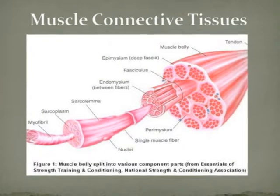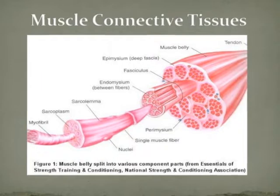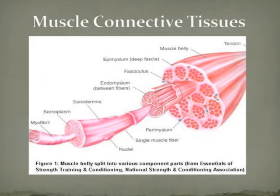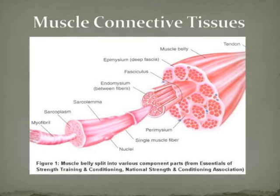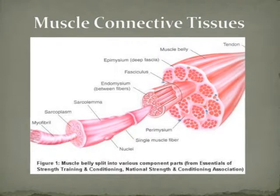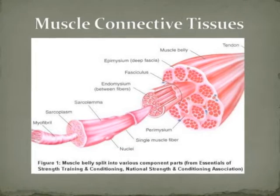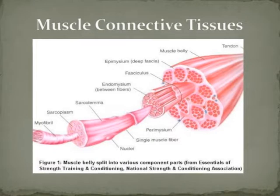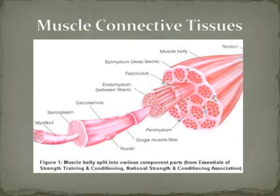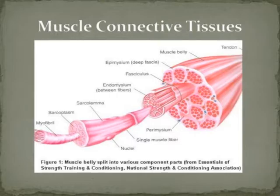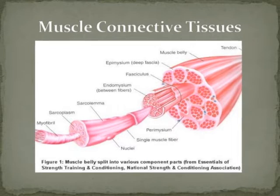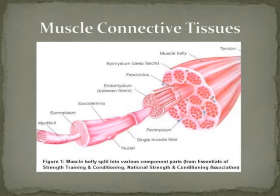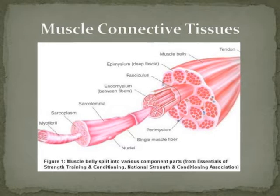We're going to start here by looking at basically a photo of the muscle belly. As you can see, it breaks down into smaller parts, into smaller parts, and smaller parts. The main stuff we're going to be talking about is really what's happening at the single muscle fiber area as it breaks down into the sarcolemma, the sarcoplasma, and the myofibril. This is the muscle belly, and in these components is the nitty-gritty of where muscle contraction occurs.